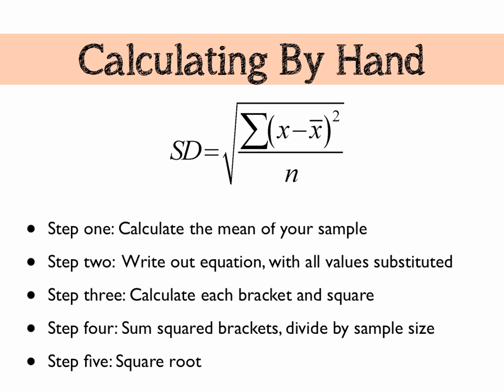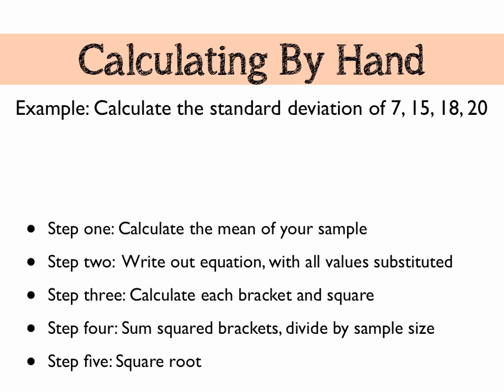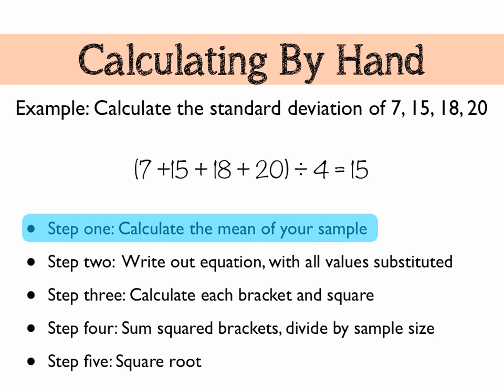So let's do an example. Let's imagine we've got to calculate the standard deviation of 7, 15, 18, and 20, a very small sample size, but it's good for this. So the first thing to do is we calculate the mean. So everyone can do this. 7 plus 15 plus 18 plus 20. Divide the lot by 4 gives us our mean, or X bar, of 15.